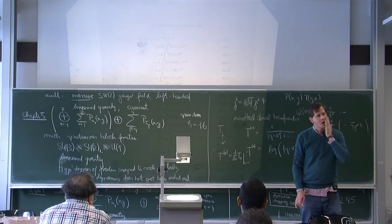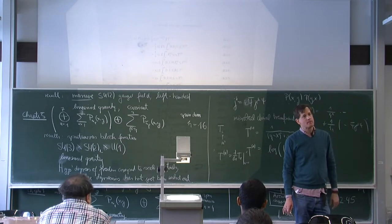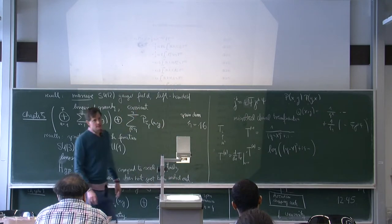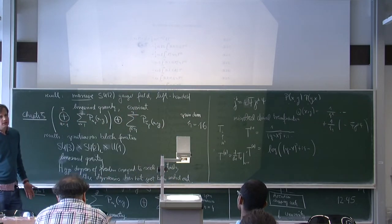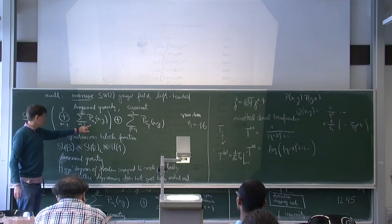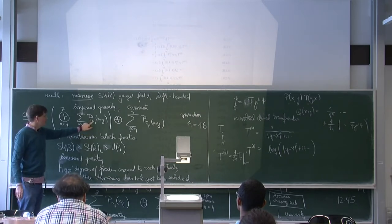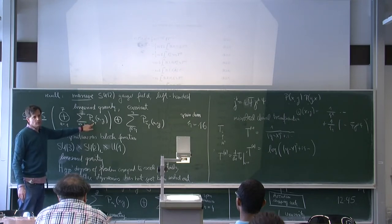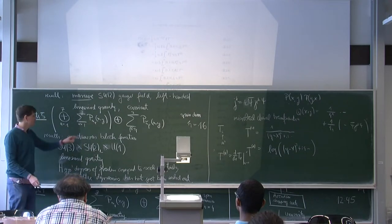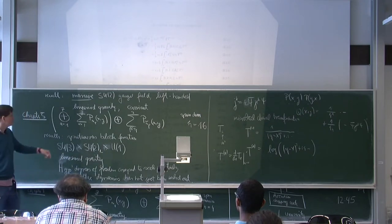The masses plugged in are the naked masses on the regularization scale, like at the scale epsilon. This is needed to get physically sensible results. Here the masses of the charged leptons and quarks are the same at this bare level. Due to self-interaction and so on, the effective masses will be different — the quarks are much heavier than the charged leptons.